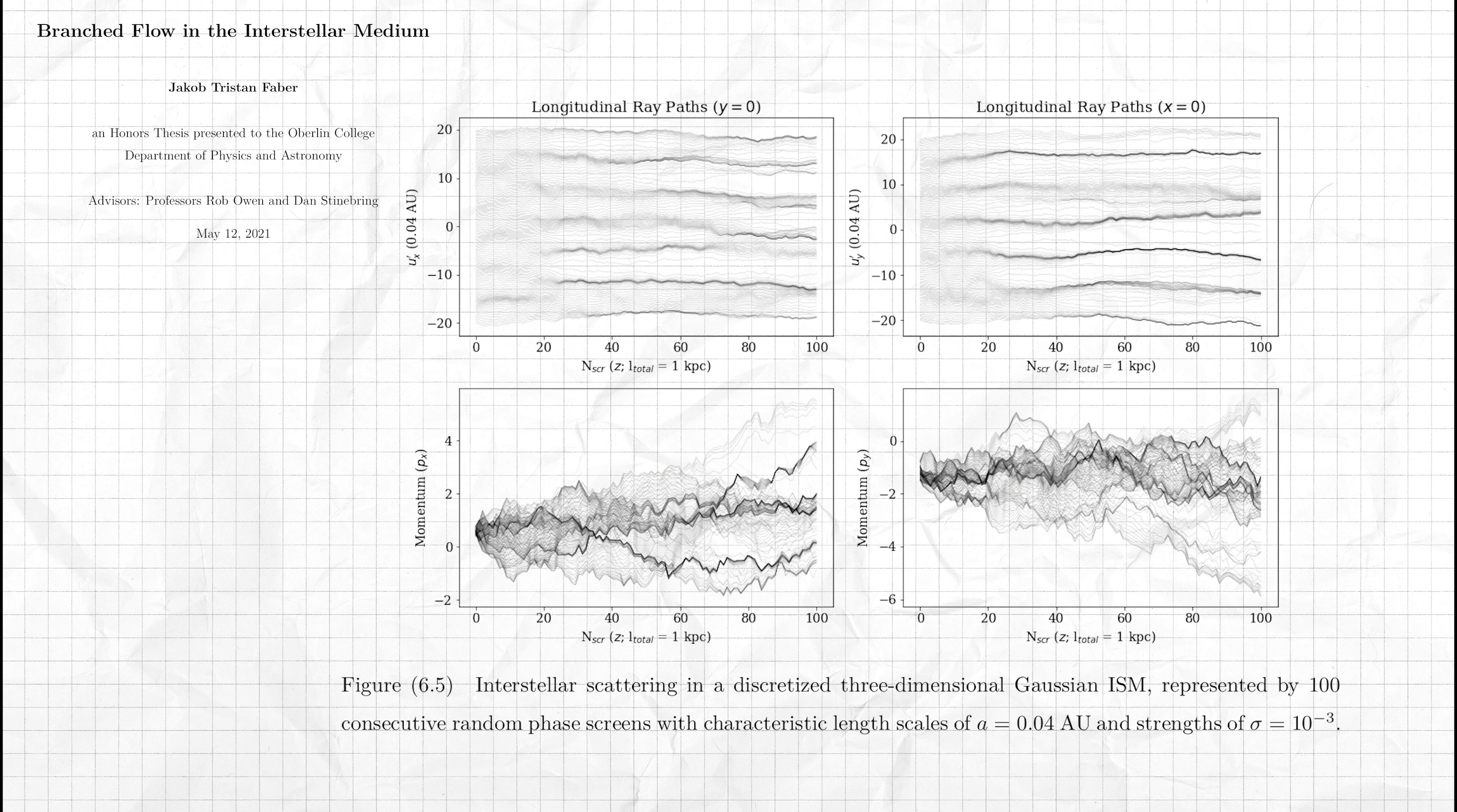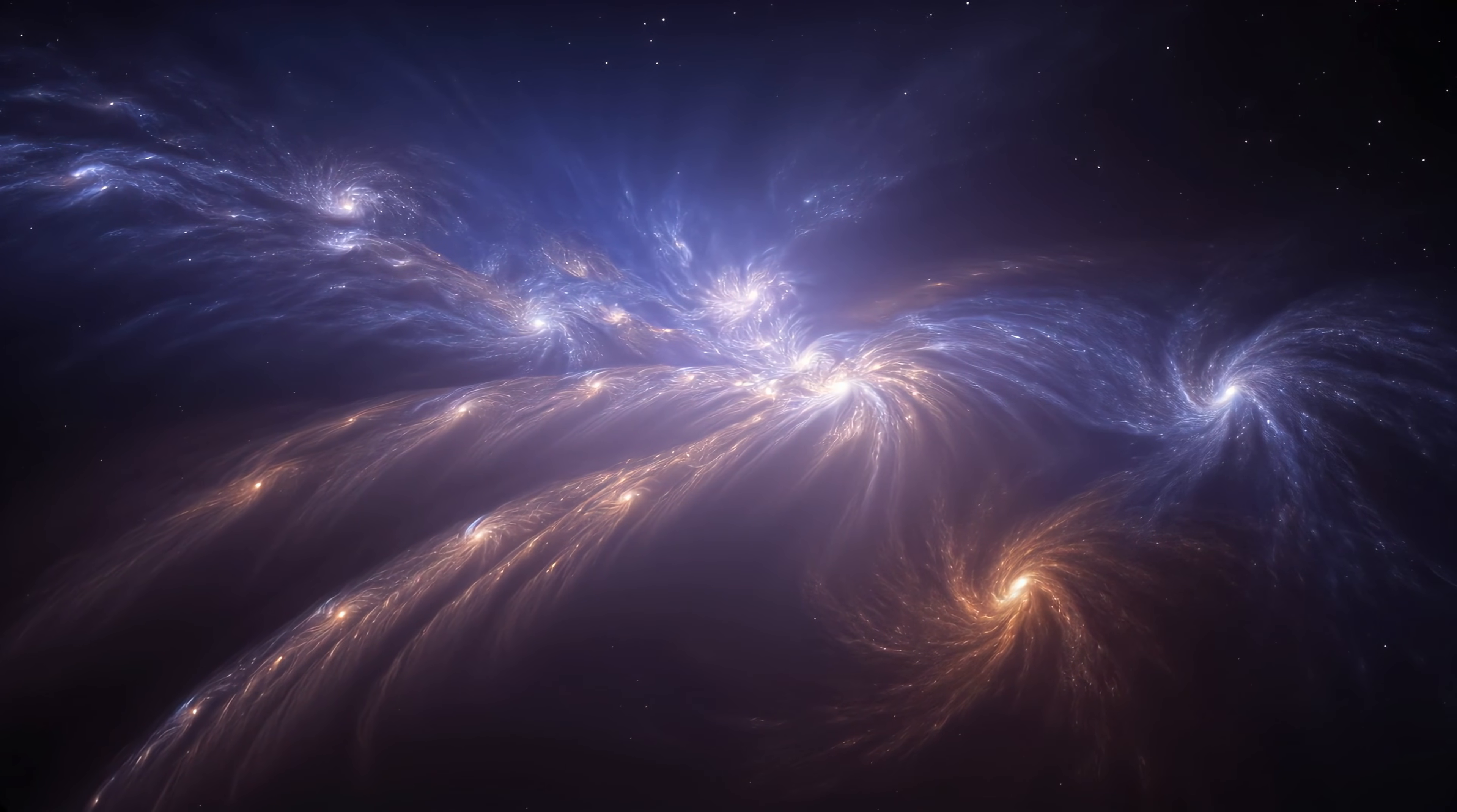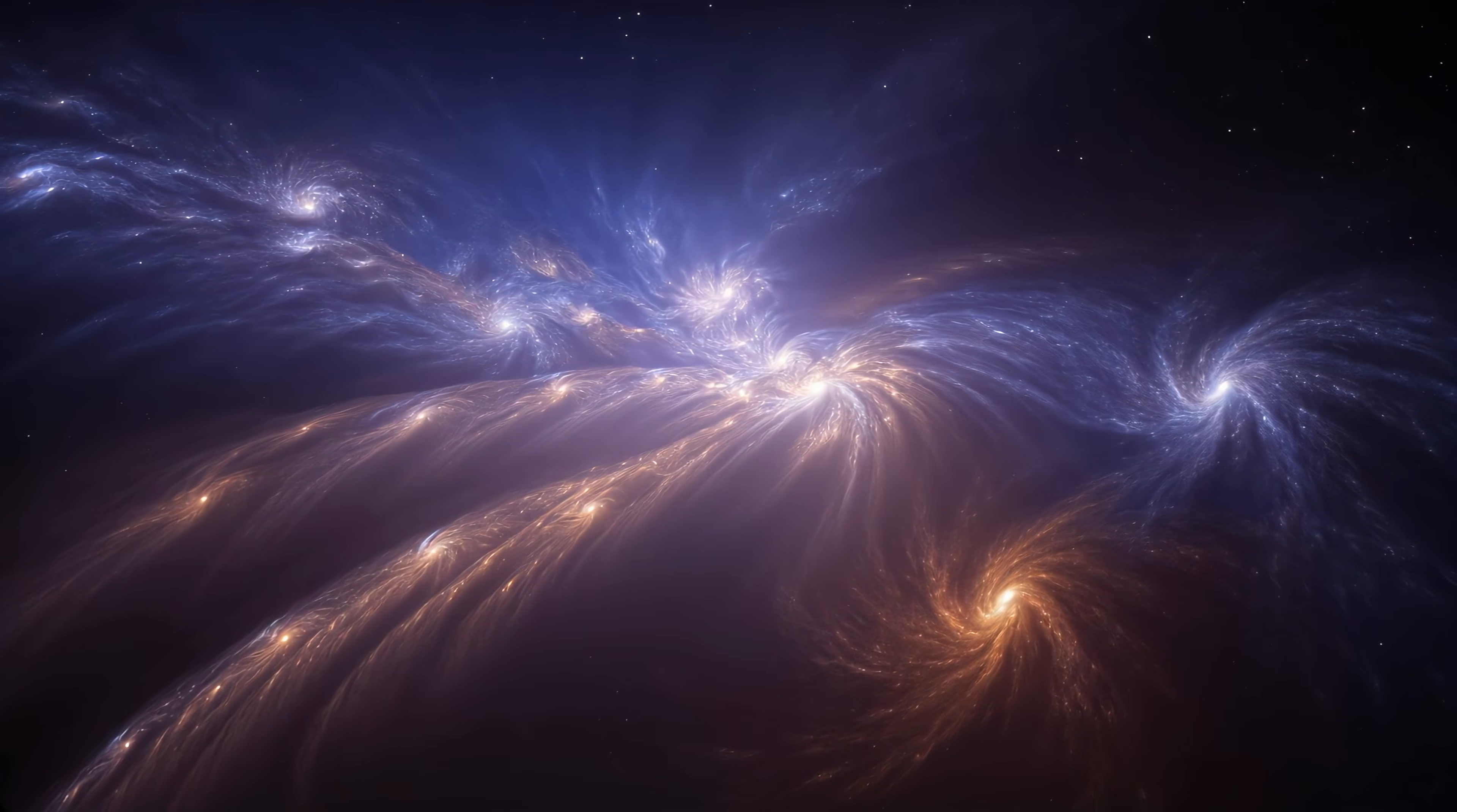Branch flow is an amazing phenomenon that appears wherever waves travel through a medium with small, smooth variations in density or speed. Especially when those variations occur on length scales larger than the wavelength. We even see similar branching behavior on cosmic scales where small gravitational variation focus matter into the filamentary large scale structure of the universe.